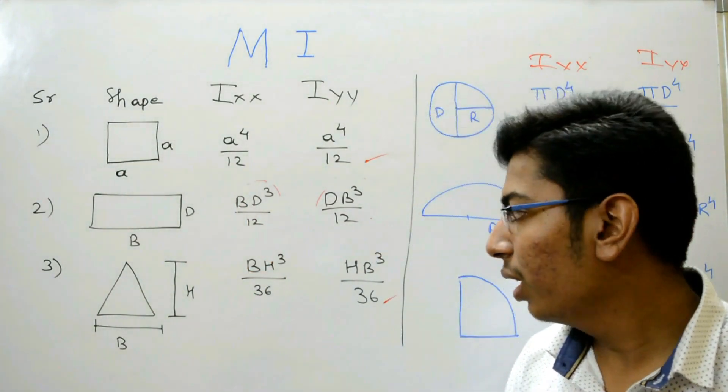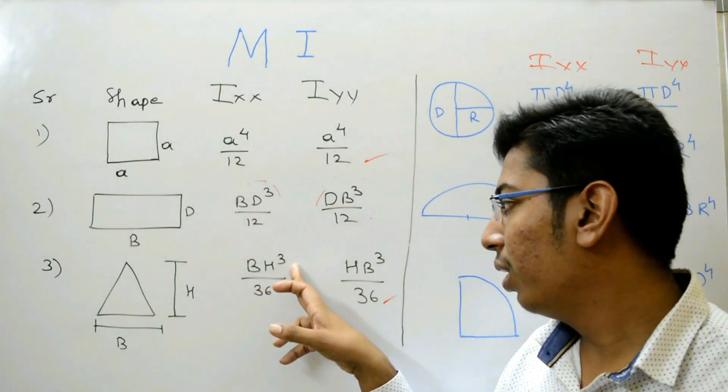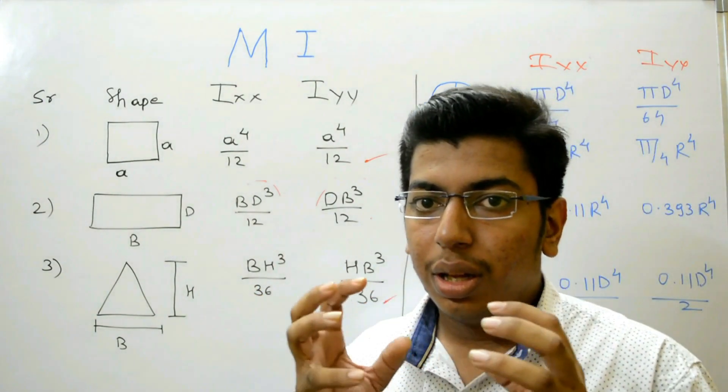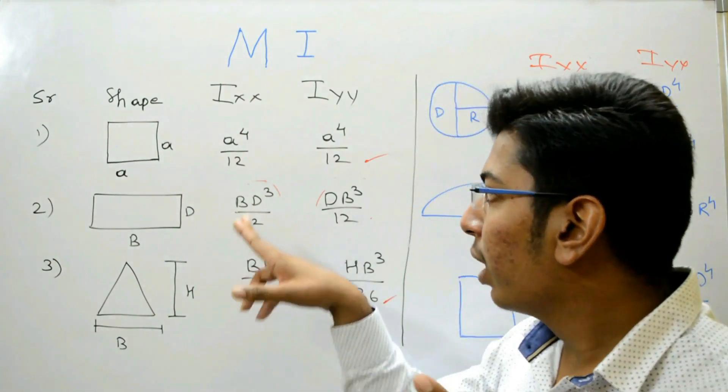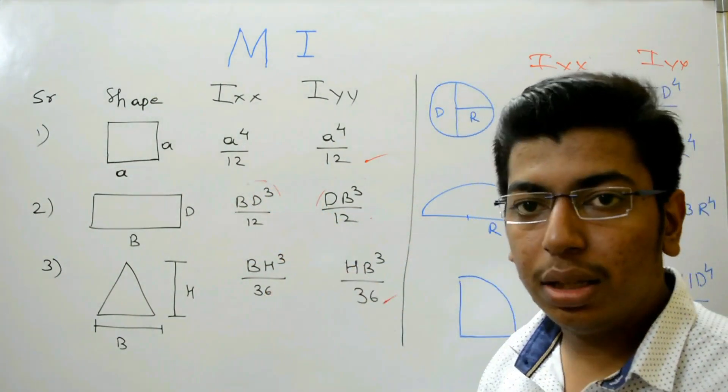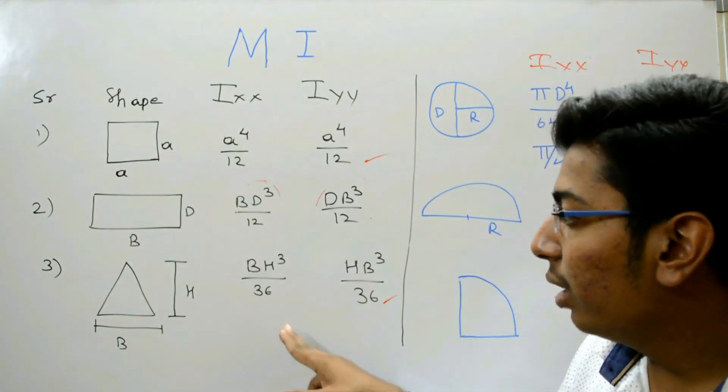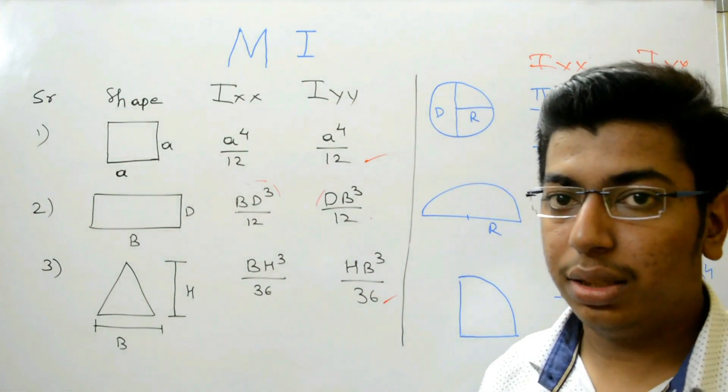Here cube is for D, here cube is for height. Now remember that in square and rectangle, the denominator is 12 and in triangle, the denominator is 36.